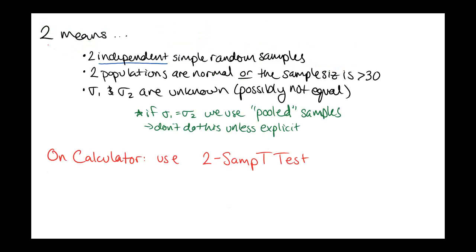We can also do the same process looking at two different means. Here we're looking at two independent simple random samples just like with their proportions. We've got two populations that are either normal or the sample size is bigger than 30. These are pretty much the same conditions that we had for our original hypothesis tests. We're just going to assume that the two population standard deviations are not known. We talked about this before. If they are known, we can use a different formula, but it's very unusual that we would know the population standard deviations.